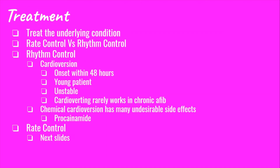Treatment will start with addressing the underlying issue if it's present. For example, if your patient is septic, fluids and appropriate treatments are needed, and these will ultimately help with the AFib RVR. However, sometimes it's going to be a mixture of the underlying condition plus AFib on top of it, so the underlying issue should be addressed first to see what kind of effect it has on your patient.